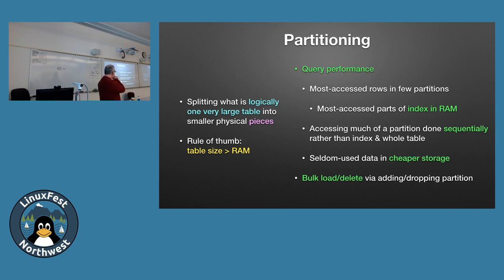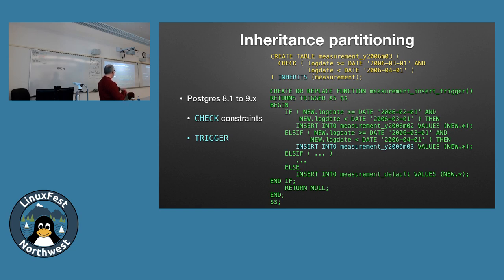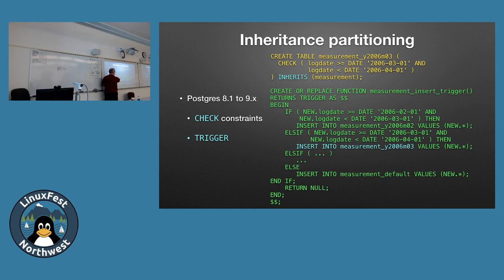There are also commands for attaching and detaching whole partitions — a way to suddenly include or exclude a bunch of data. The old way used inheritance. There's an INHERITS keyword in Postgres, but to get the row to the right table you had to write your own trigger code. For example, for February 2006, you'd write a CREATE OR REPLACE FUNCTION trigger that every time a row was inserted into the master table, the trigger would direct it to the right subtable. It worked, but you had to write that code yourself.